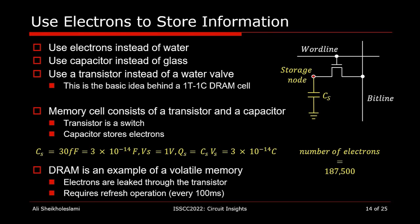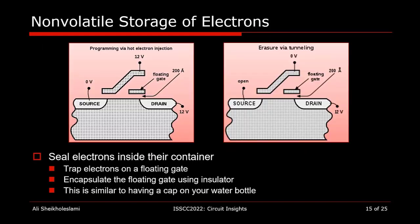Every capacitor in your 1-gigabit DRAM is examined every 100 milliseconds to either fill it up or empty it — this is happening in your cell phone right now. For non-volatile storage, the transistor shown here has a floating gate that can trap electrons. The floating gate is fully isolated and we need a special mechanism called hot electron injection to get the electrons there and to take them away. You can think of this as a bottle holding electrons with a cap, not letting them escape.